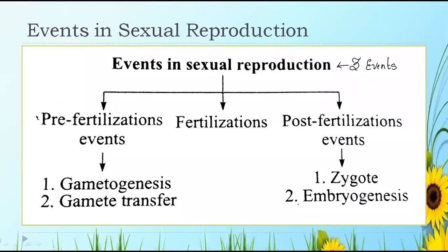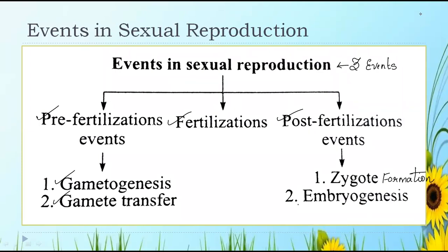The three events in sexual reproduction are: the first event is pre-fertilization, the second is fertilization, and the third is post-fertilization. In the pre-fertilization event, it is subdivided into gametogenesis and gamet transfer. The post-fertilization event consists of zygote formation and embryogenesis.